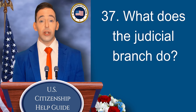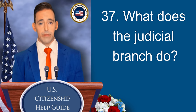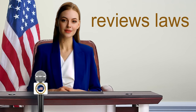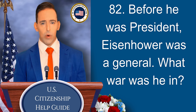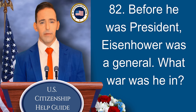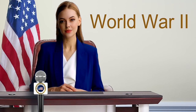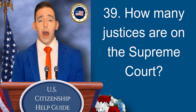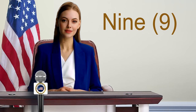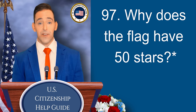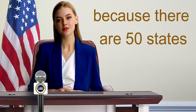What does the judicial branch do? Reviews laws. Before he was president, Eisenhower was a general. What war was he in? World War II. How many justices are on the Supreme Court? Nine. Why does the flag have 50 stars? Because there are 50 states.